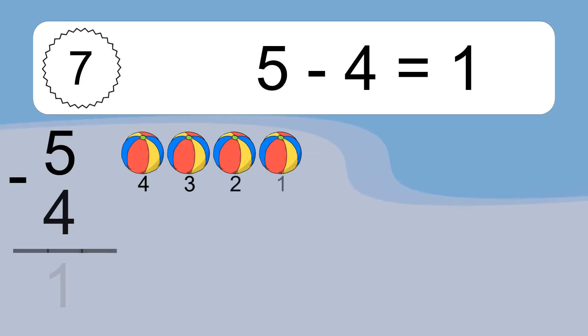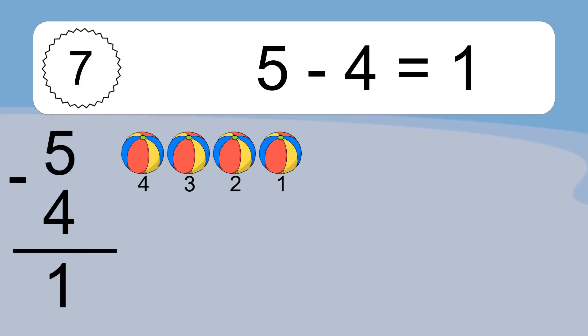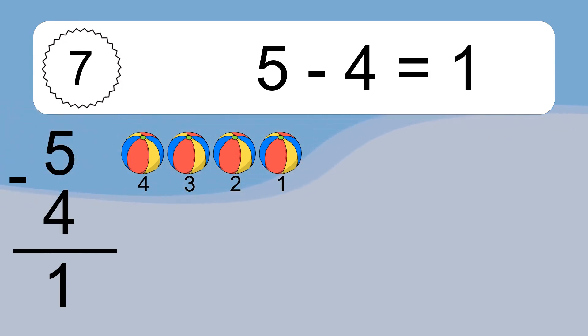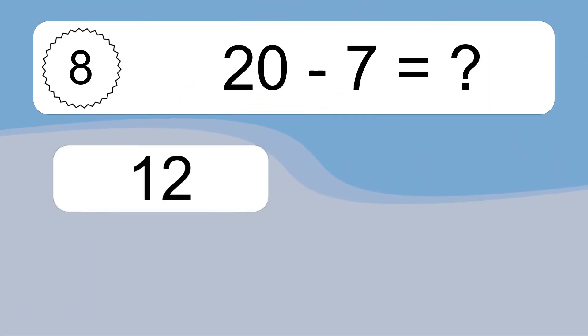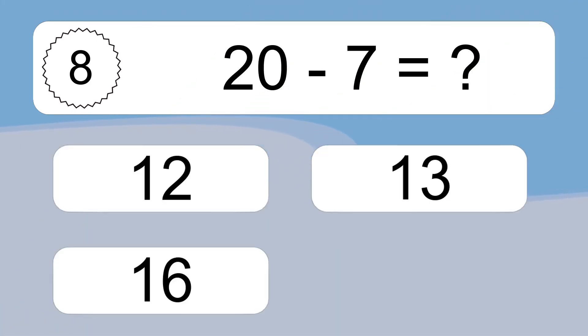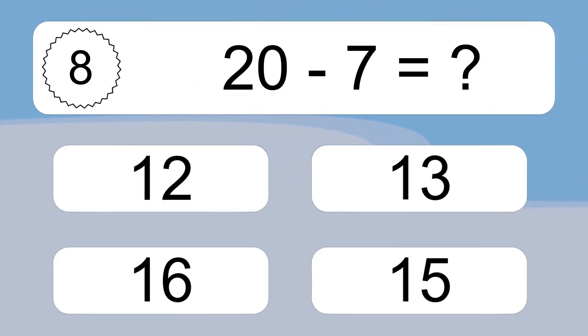5 minus 4 equals what? 5 minus 4 equals 1. Let's count it: 4, 3, 2, 1.